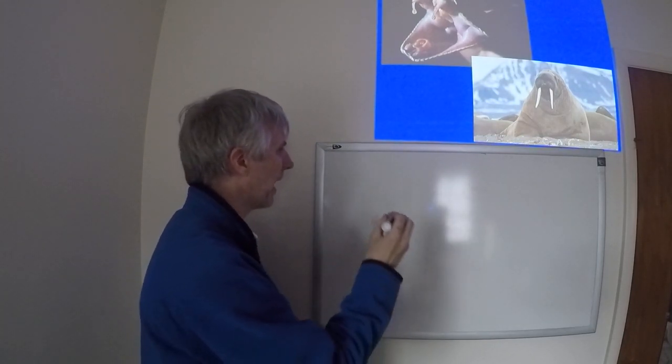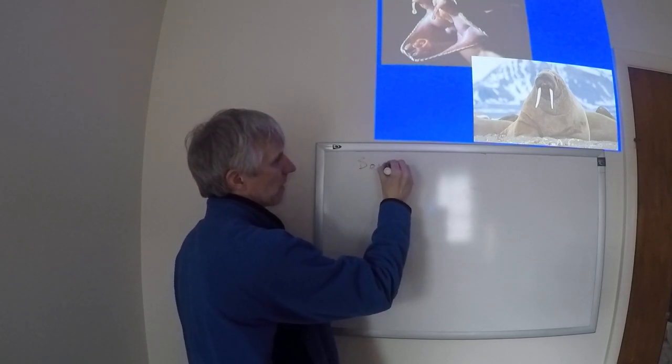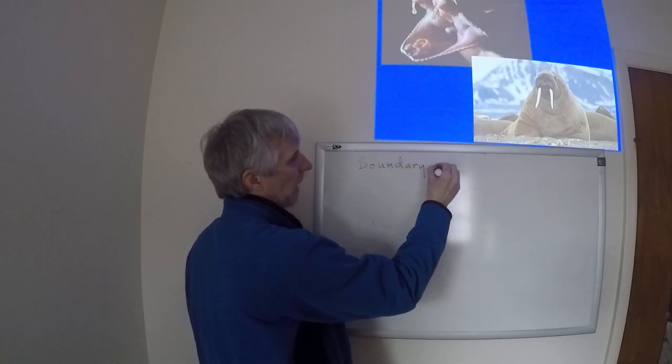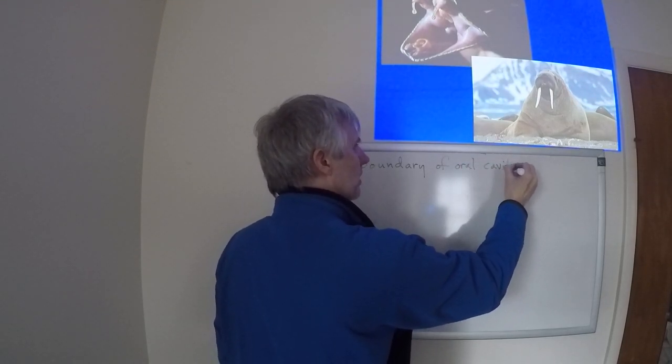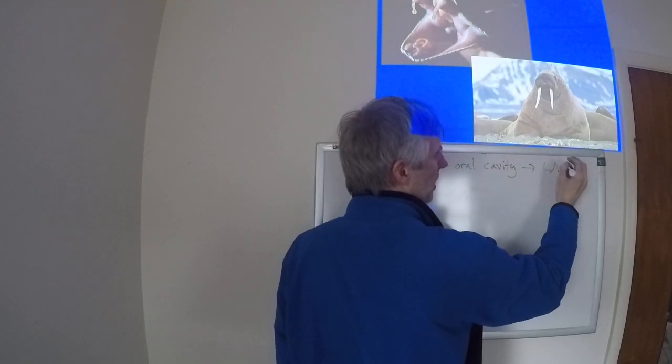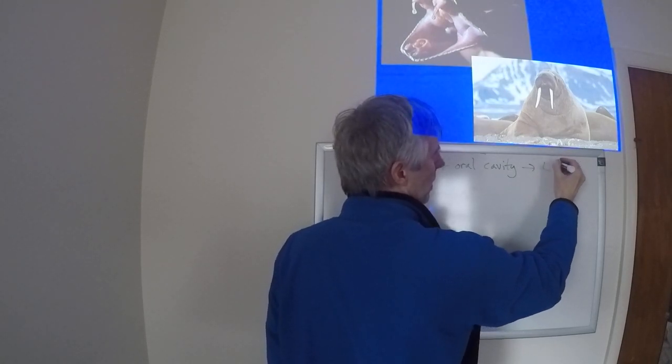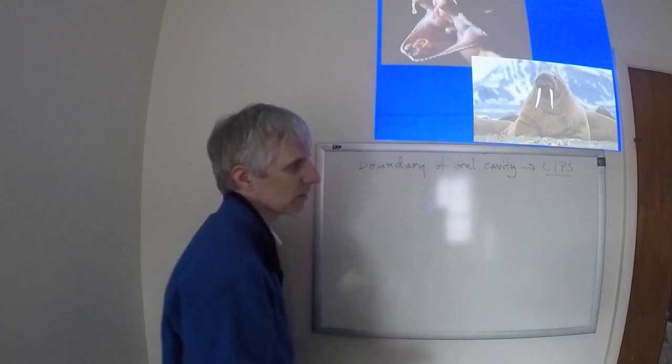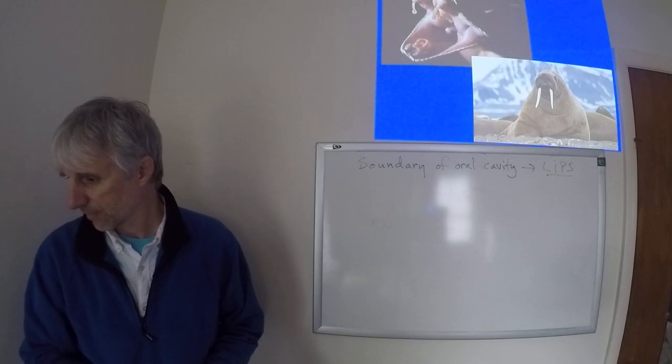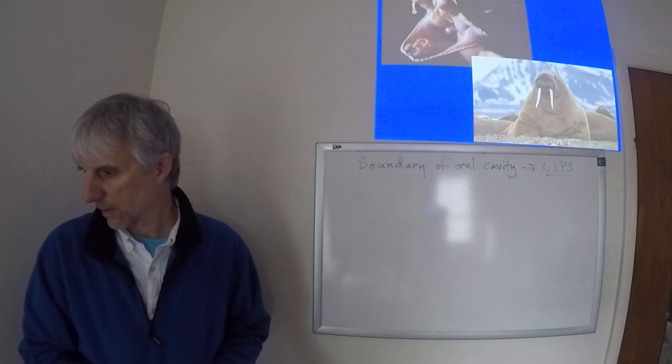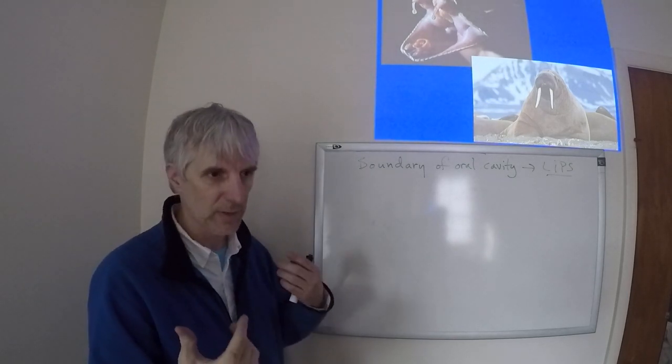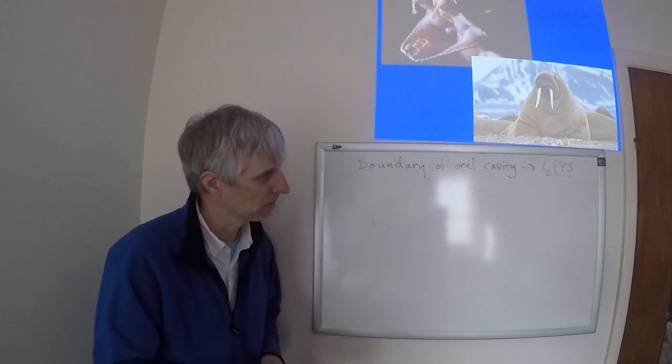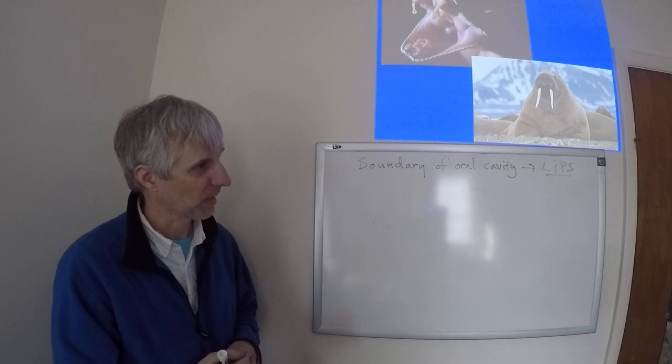At the boundary of the oral cavity, the mammals have structures called lips. Generally, the upper and lower lips follow the line of the teeth rows.